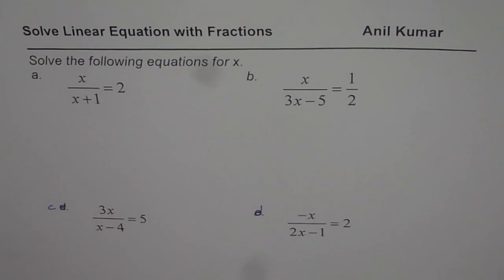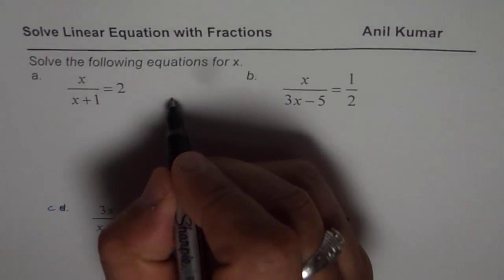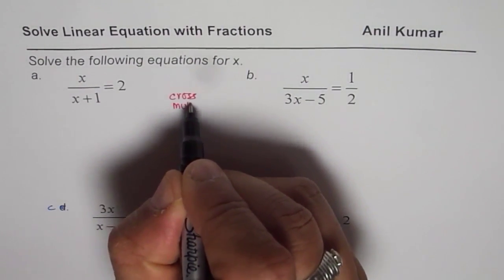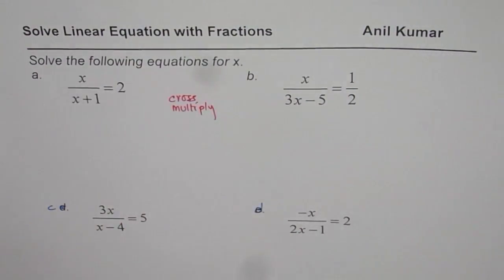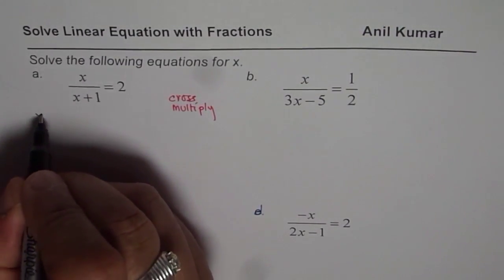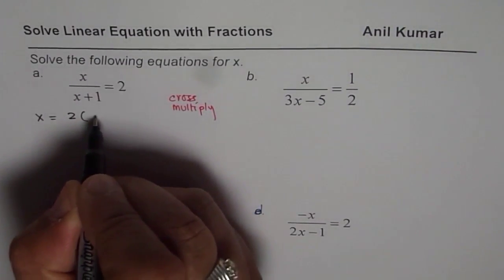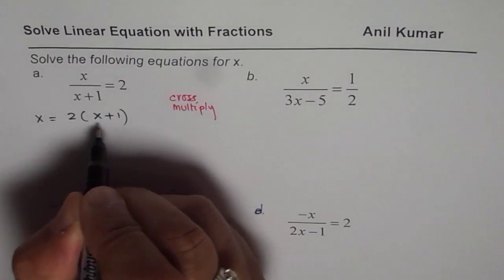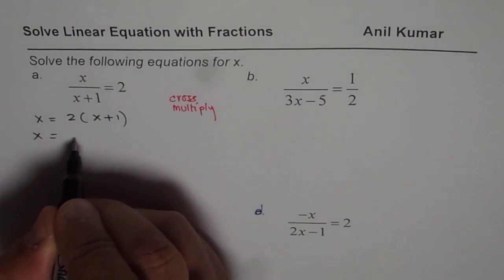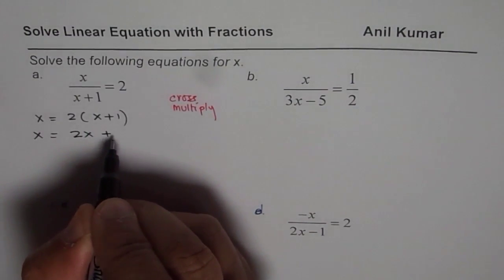First step is, as you know, cross multiply. Whenever you have ratios, that is the best way to go about. So we have x on the left side equals 2 times (x+1) on the right side. Let's open the bracket using distributive property. So we have 2x + 2.